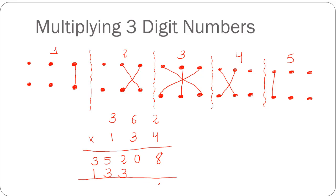On adding the results: 8 remains as it is, 0 remains as it is, 2 plus 3 gives me 5, 5 plus 3 gives me 8, and 3 plus 1 gives me 4. So 48508 is our answer. Once you memorize this matrix and how to go about with the multiplication, multiplying three-digit numbers will become really fast. I would recommend you all to practice a lot of examples to become really fast at this method. Let's look at one last example now.